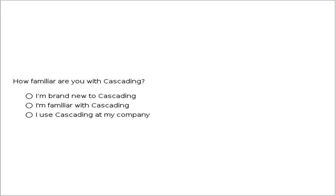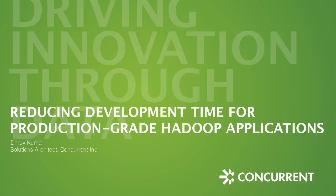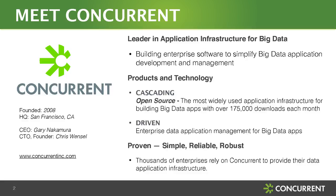Thank you Ali. Hi everyone, welcome to this webinar. I'll be taking you through the cascading portion — how you can use cascading to accelerate your big data application development. Cascading is provided by Concurrent, a company founded in 2008 and headquartered in San Francisco. Cascading was developed initially by Chris Wenzel, who had two key observations: first, it is very hard to find skilled MapReduce Hadoop developers; there are a lot of Java developers out there, but not many MapReduce app developers.